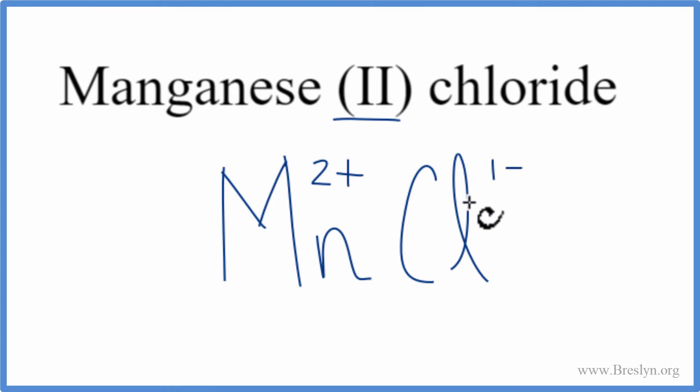So these need to add up to zero since it's an ionic compound, and here they don't. But we can use something called the crisscross method to make that happen. We can move the 1 here and the 2 here. We don't write the 1. Get rid of these. And that's the formula for manganese (II) chloride.